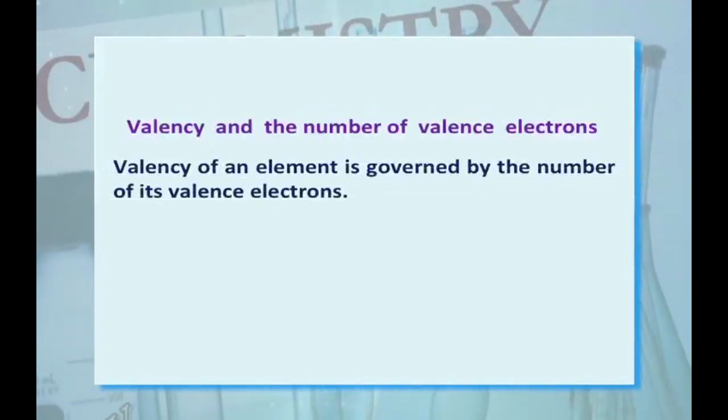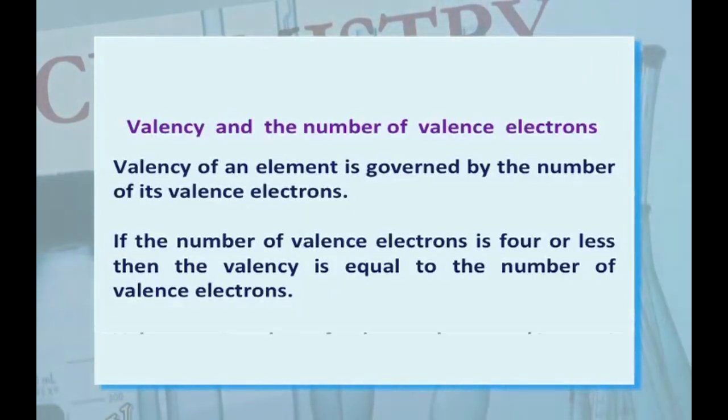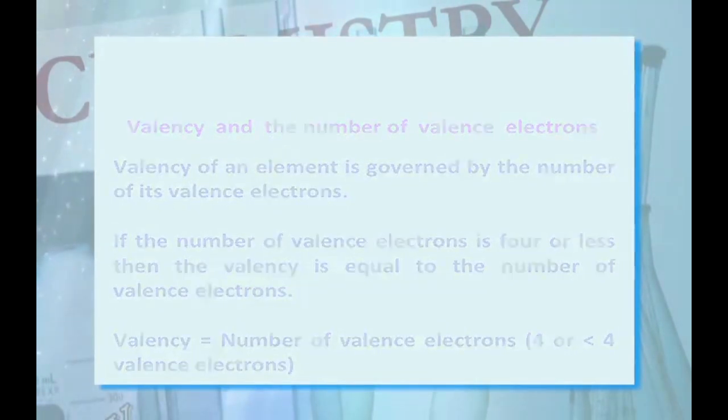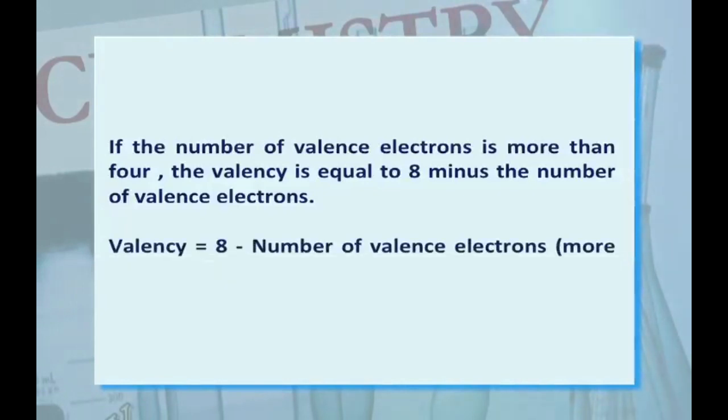Valency of an element is governed by the number of its valence electrons. If the number of valence electrons is 4 or less, then the valency is equal to the number of valence electrons. If the number of valence electrons is more than 4, valency is equal to 8 minus the number of valence electrons. For example, valency equals 8 minus number of valence electrons when valence electrons is more than 4.